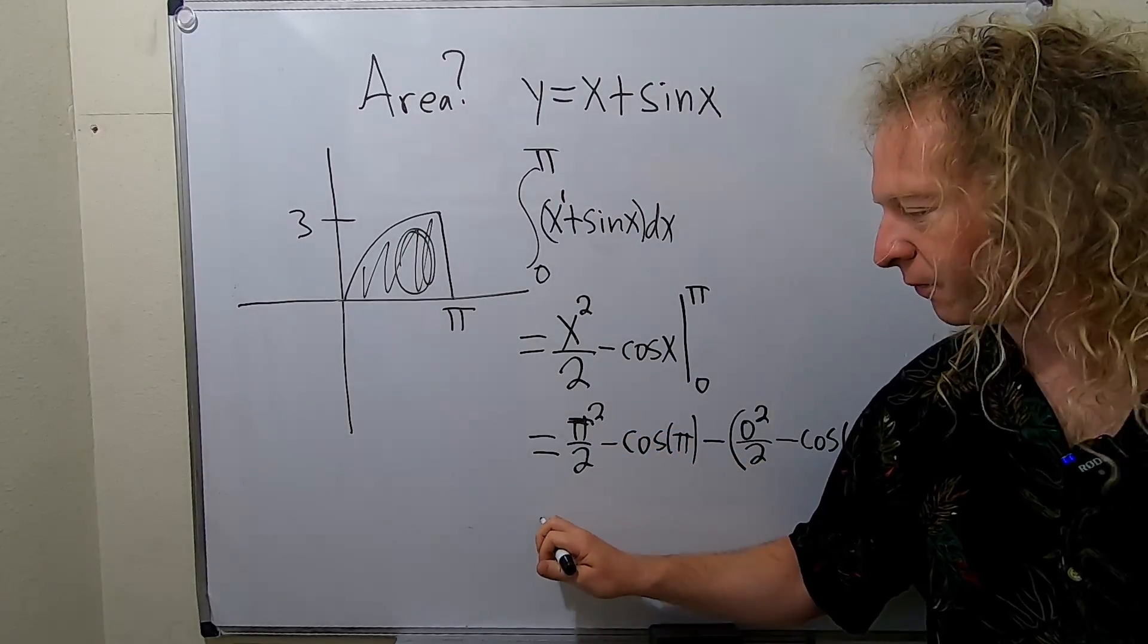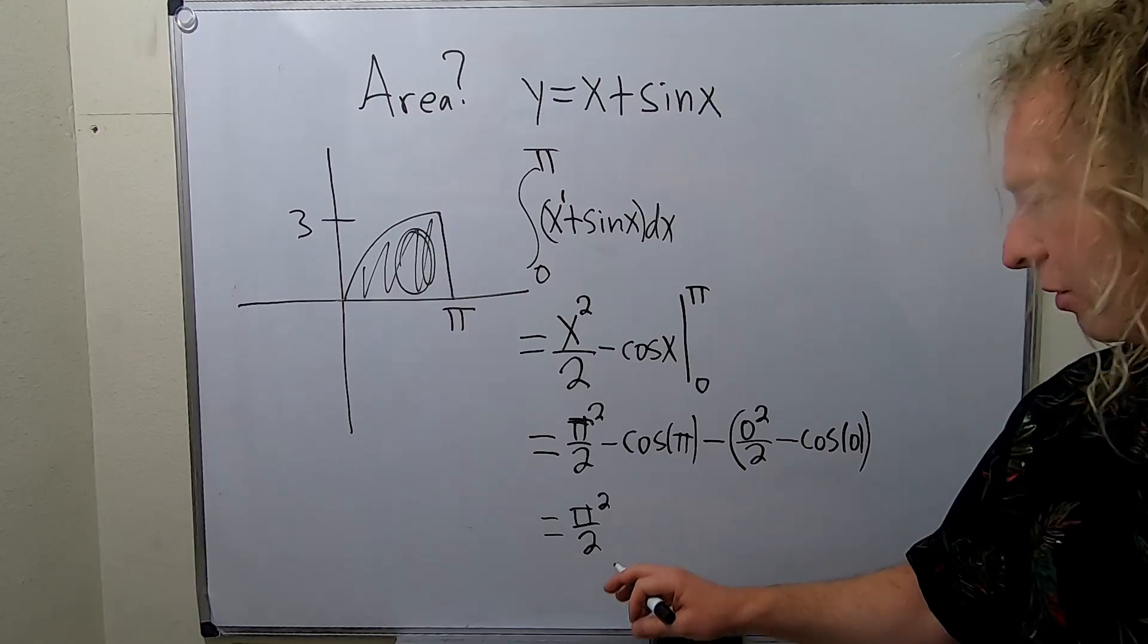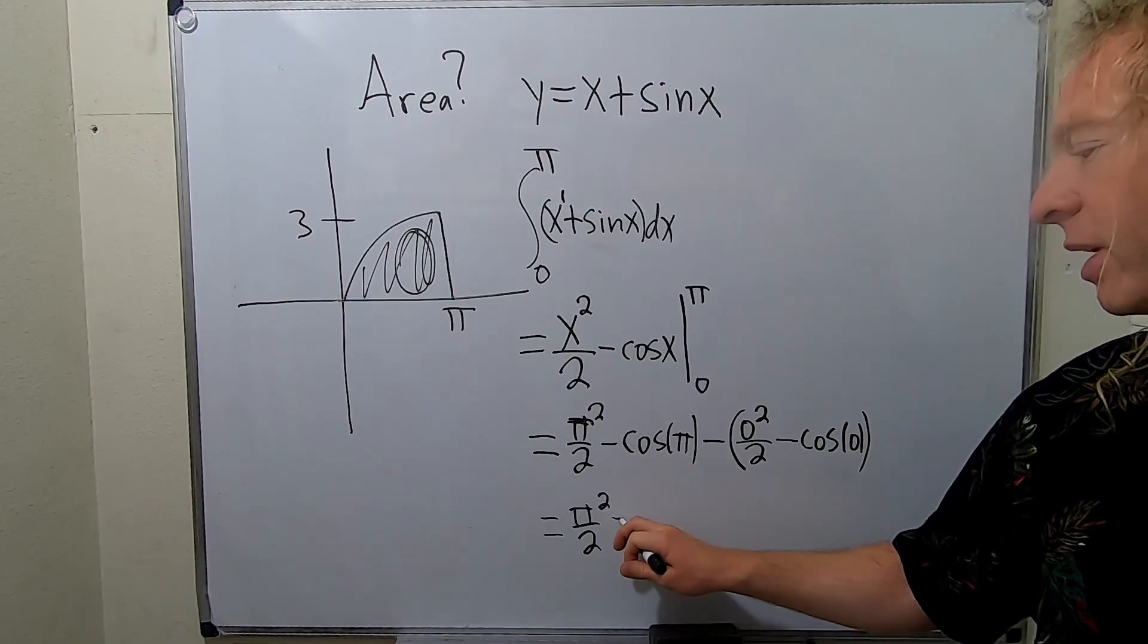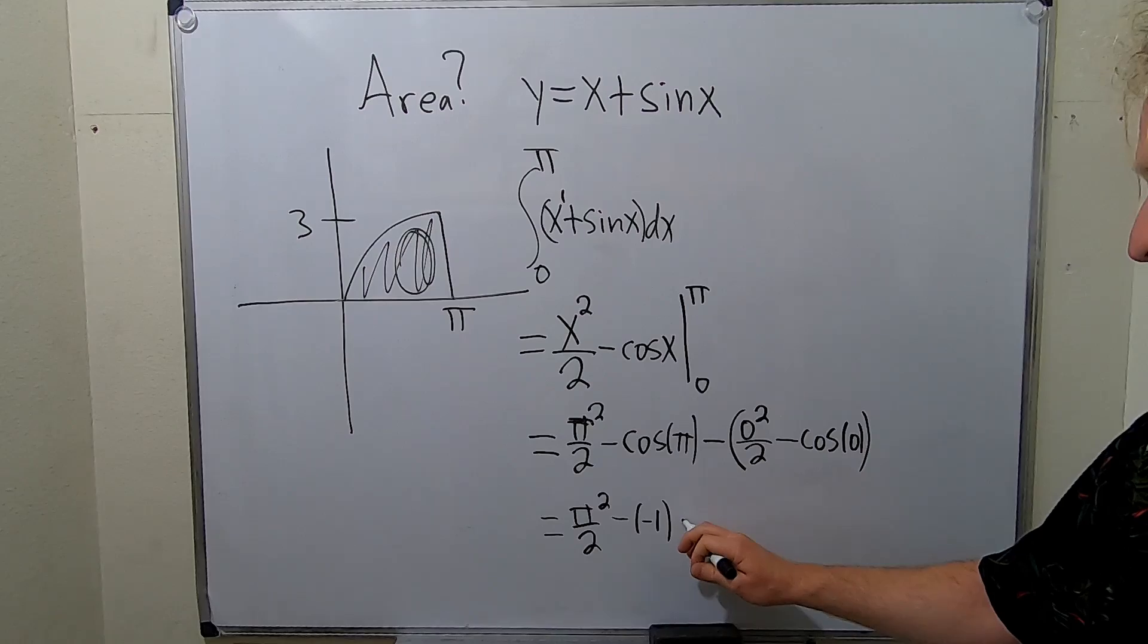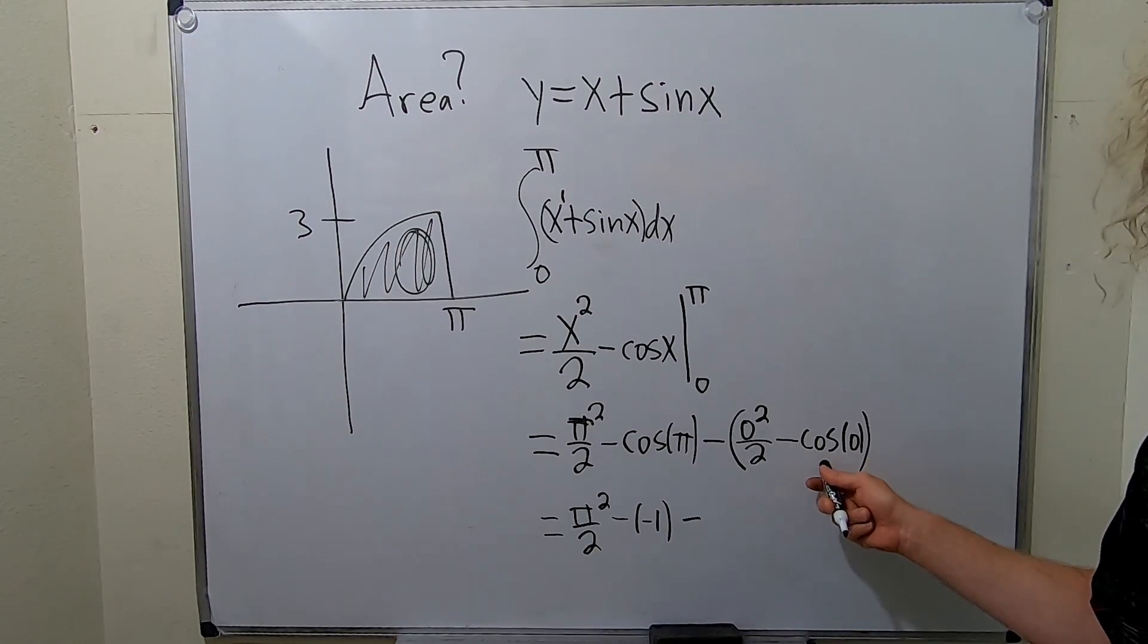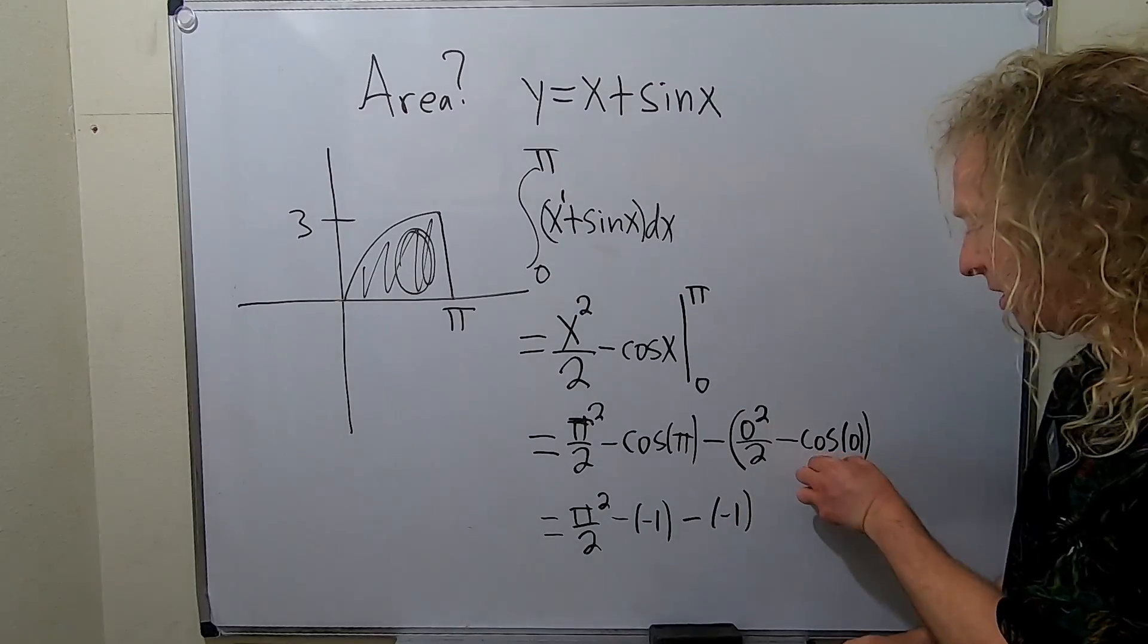All right so you have pi squared over 2. Cosine of pi is negative 1, so this is minus negative 1. This is gone, this is zero. Cosine of zero is 1. So this is minus that because this becomes 1.